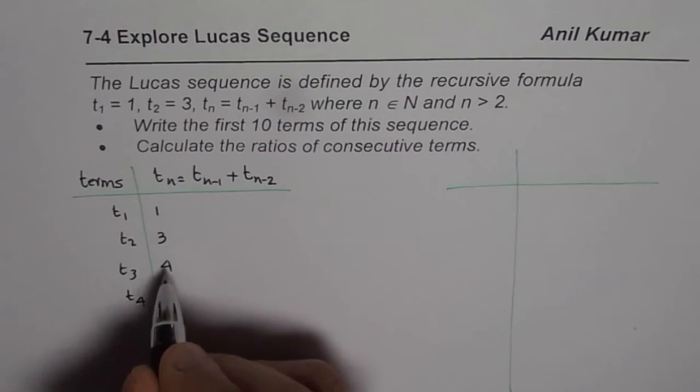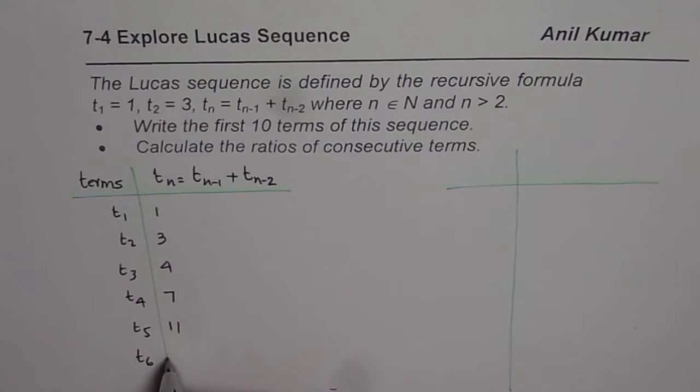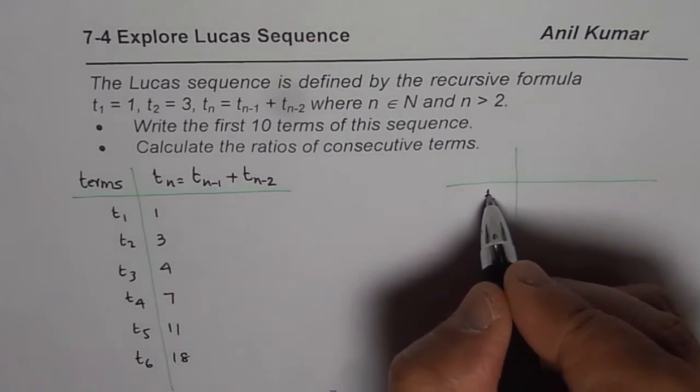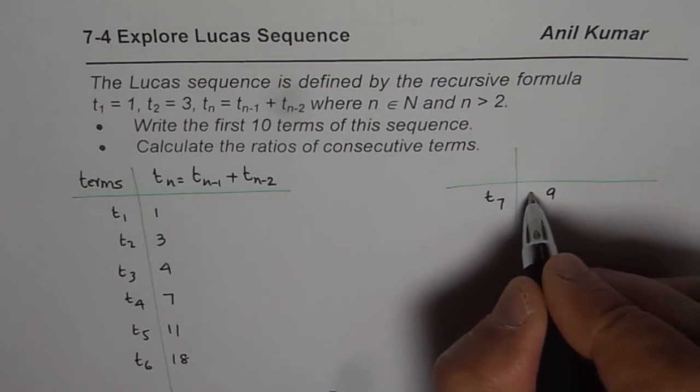So t4 will be 4 plus 3 which is 7, t5 will be 7 plus 4, 11. Let me write t6 here, 11 plus 7 will give me 18. So let us write down t7 here, 7 will be 18 plus 11 which is 29.